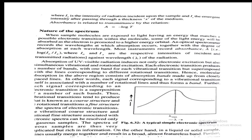Each signal corresponding to a vibrational transition is associated with a number of rotational levels and thus forms a line. Each signal corresponding to an electronic transition is a superposition of a number of vibrational and rotational transition bands. Vibrational transitions produce coarse structure and rotational transitions produce fine structure.